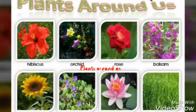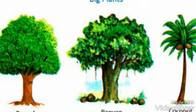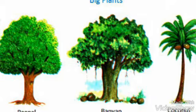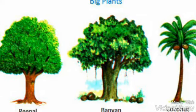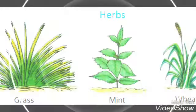We see different kinds of plants around us. Trees, papaya, banyan, coconut.